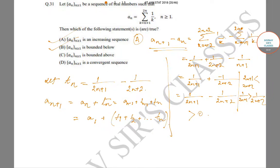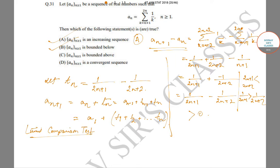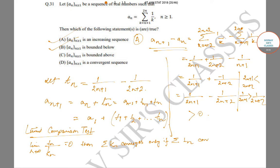Now by the limit comparison test, which is a very useful test to compute limits of series: if the limit as n goes to infinity of t_n divided by k_n equals 0, then the sum of k_n converges only if the sum of t_n converges.